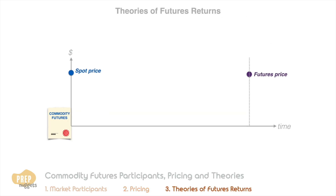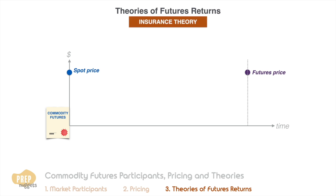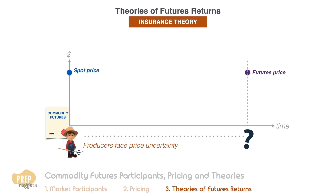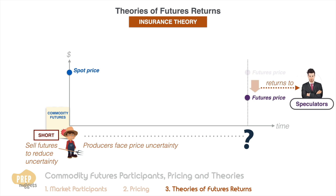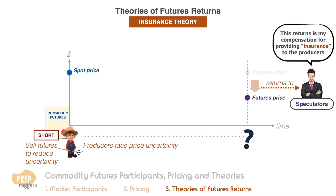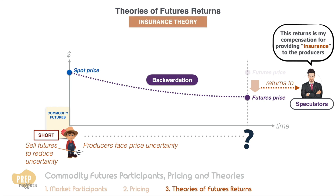There are three theories that seek to explain this. First, the insurance theory argues that commodity producers face uncertainty about the price they will receive for their future output, so they want to reduce this uncertainty by selling futures contracts. This selling drives down futures prices. The futures prices will be less than current spot prices to provide a return to speculators buying futures from producers. The resulting positive return to the speculators is their return for providing insurance to the producers against price uncertainty. This results in backwardation normally, which is why the insurance theory is also known as the normal backwardation theory.